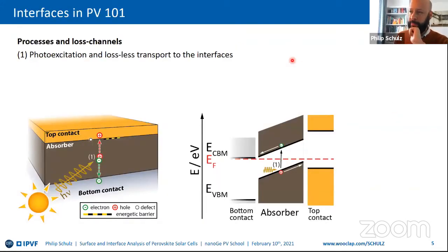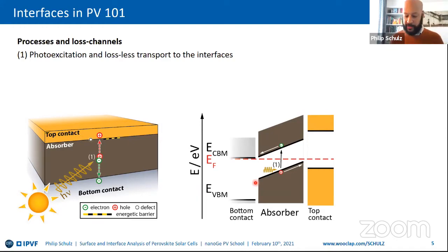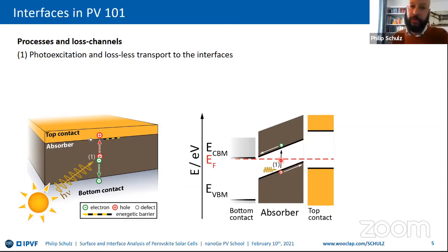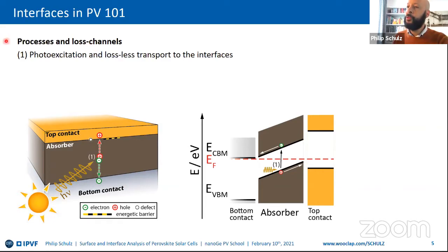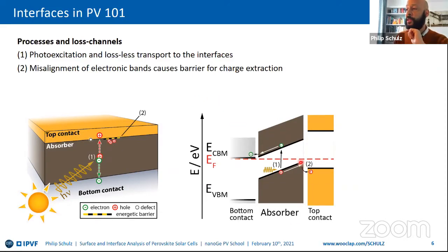When it comes to interfaces in PV, I want to highlight why we really care about this. This is a very simplified device — an absorber layer sandwiched between top and bottom contacts. Here we're at short-circuit conditions with zero voltage, so there's no power output. We can use this concept to understand key interface properties: photoexcitation and lossless transport of carriers to the interfaces, followed by extraction of carriers from the absorber into the contact. A misalignment of electronic bands can cause a barrier for extraction, leading to recombination.